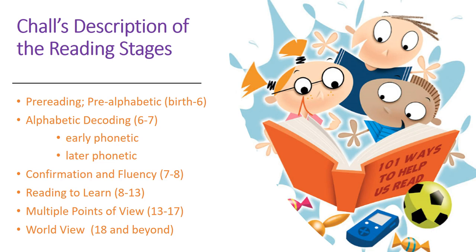Then students move into the confirmation and fluency stage, where their decoding skills have gotten pretty solid — they're working to build those skills, becoming more automatic, increasing fluency, and practicing with harder and harder words. From about age eight to thirteen, around third grade, students make that shift from learning to read to reading to learn — using their skills to support their education and learn information from text. As they get into their teenage years, their reading develops to the point where they recognize multiple points of view in text and need to synthesize information and make value judgments.